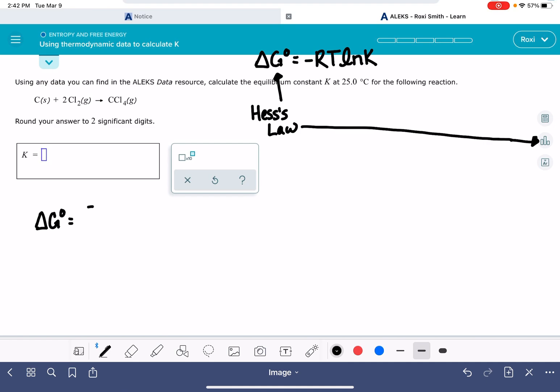Products minus reactants multiplied by their coefficients. So I'm going to be starting with the delta G value for CCL4 gas, and it is, we have to be really careful, there's a whole bunch of CCL4s in here. So the correct one is negative 64, the units are kilojoules, I'm going to write them at the end. And then from that we are going to subtract the delta G value of all of our reactants.